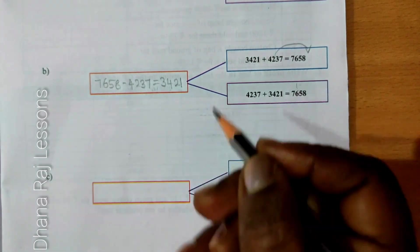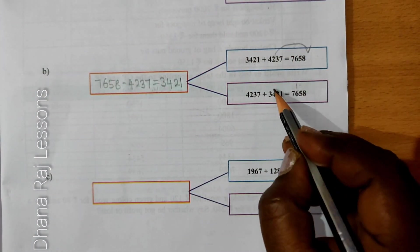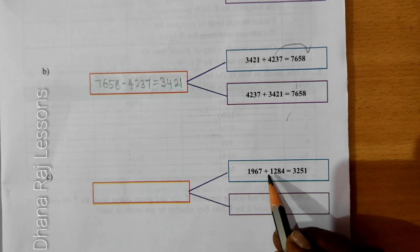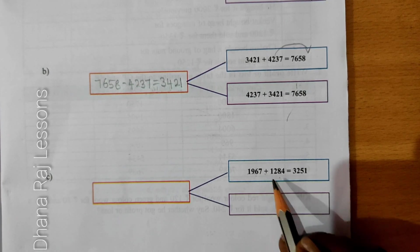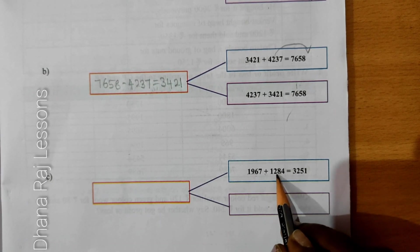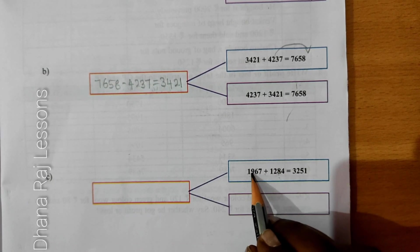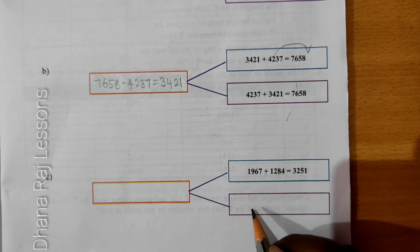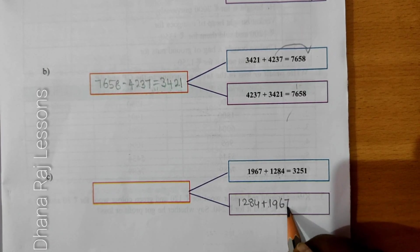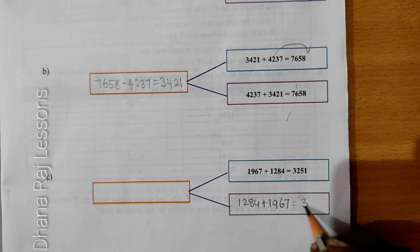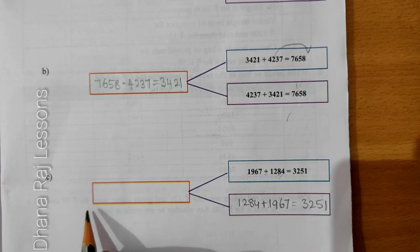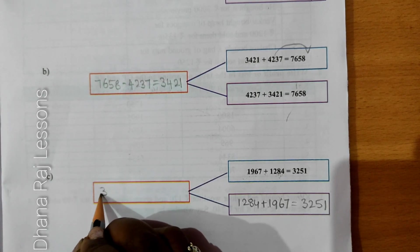3421 — that is the answer. We write both subtraction facts. Next: from the addition fact 1284 plus 1667 equal to 3251, we write the subtraction facts. First, put the total: 3251.